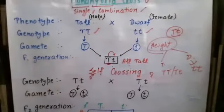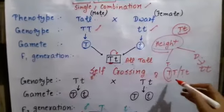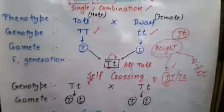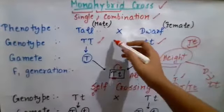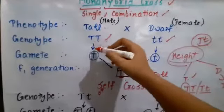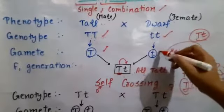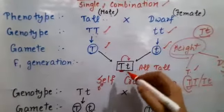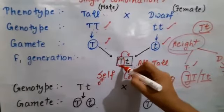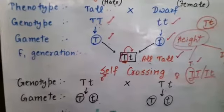We already studied that the dominant allele always expresses itself. So whether it is TT or Tt, the plant will be tall. Now look at the cross: TT crossed with tt. When we make the gametes, only one type of gamete is formed from each parent — T from one and t from the other. When they mix, we get Tt, and since dominant always expresses, all individuals will be tall.